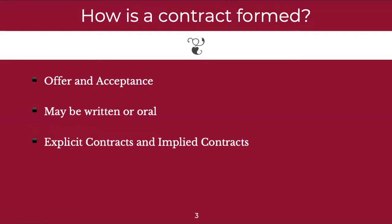First, let's look at how is a contract formed? Now for any contract to be formed, there are two basic requirements which must be fulfilled. First, there must be an offer. And second, there must be acceptance. For example, I must offer to buy your house and you must accept my offer, and then we can enter into a legal contract.